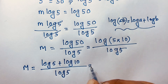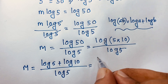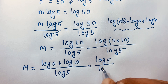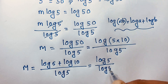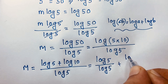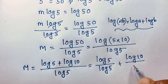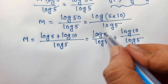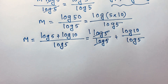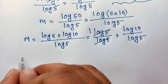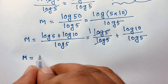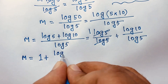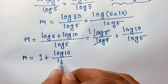Now if I separate this fraction, it will be log 5 over log 5, plus log 10 over log 5. The log 5 over log 5 cancels out to 1. So m is equal to 1 plus log 10 over log 5.